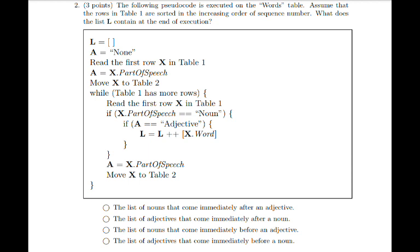So if you look at the options, we can clearly see that the first option, which states, the list of nouns that come immediately after an adjective, is the correct answer.